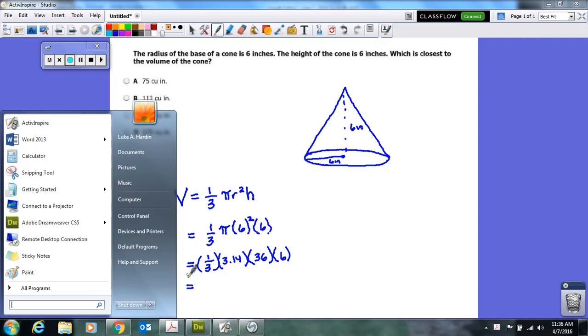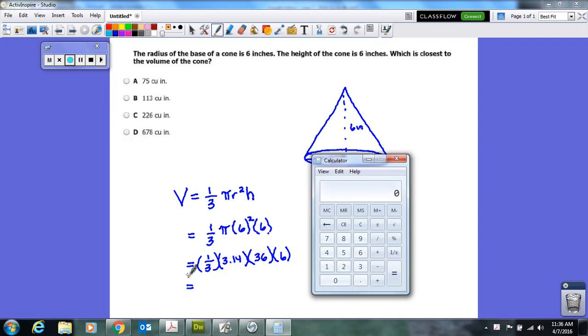So to finish it off, let's get out our trusty calculator and go ahead and multiply all these things together. So one third would be one divided by three, and we multiply that by 3.14.